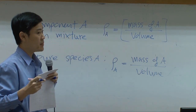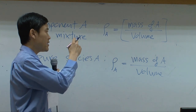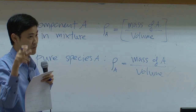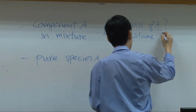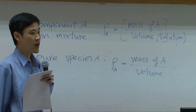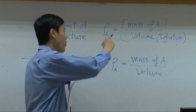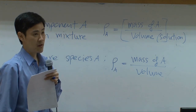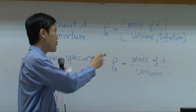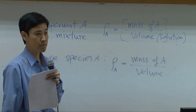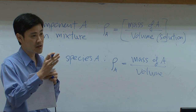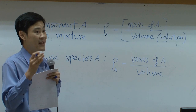The physical meaning is a little bit different in the mixture. The term ρ_A in the mixture represents how much mass of A per volume of the solution — so volume here is the volume of the solution or volume of the mixture. If you have more A in the solution, ρ_A is a large number; if the solution is diluted in A, ρ_A is a small number. But if you have only A in the solution, it becomes pure species A, and ρ_A becomes the density of species A.